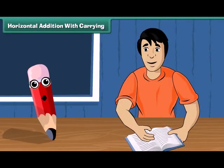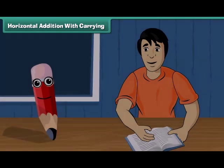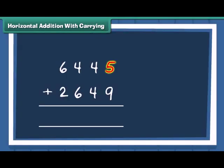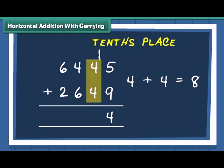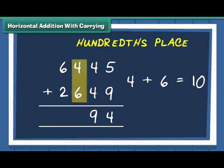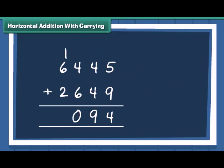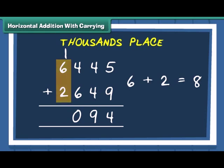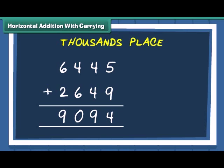Let us practice one more example with a bit of a twist. We have 2 numbers, 6445 and 2649. Add the numbers at 1's place. Now carry 1 to the 10's place. Add the 10's. Then add the numbers at 100's place. We have 1 number carried on to 1000's place. Add 1000's to make the final answer. So, the answer to the problem is 9094.